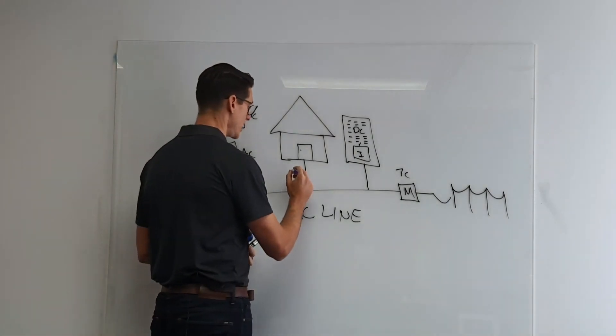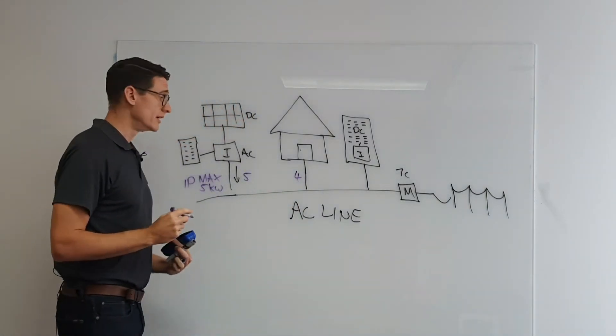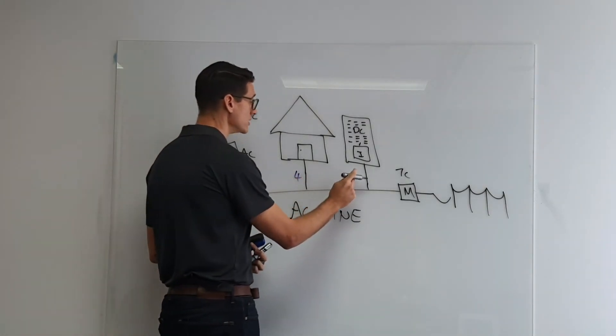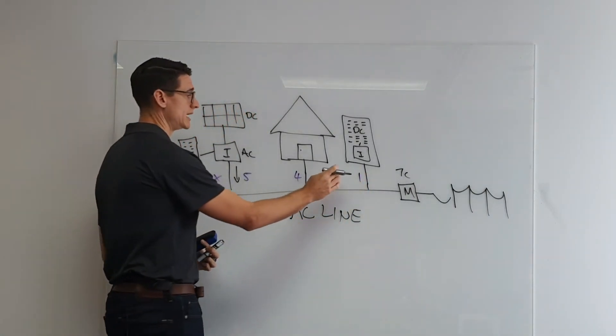Let's just say for instance, you have four kilowatts of load in the home, at that point in time, you only have one spare kilowatt worth of power to charge your AC coupled battery.